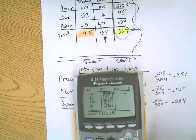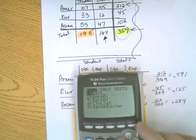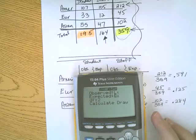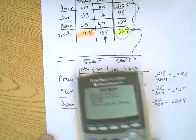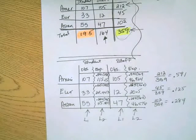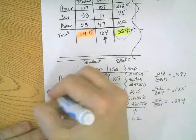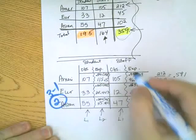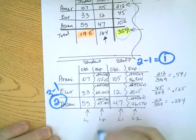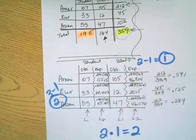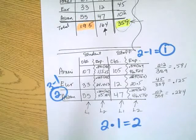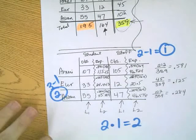With L1 and L2 entered, we need the degrees of freedom. Because we have two categories, the degrees of freedom for car origin is 3 minus 1, which is 2, and for students vs. staff it's 2 minus 1, which is 1. We multiply these together, giving us degrees of freedom equal to 2.